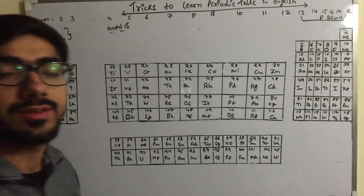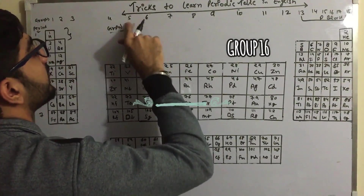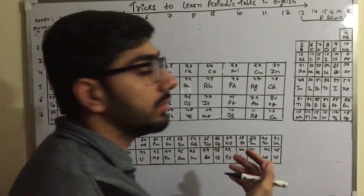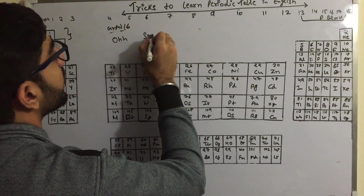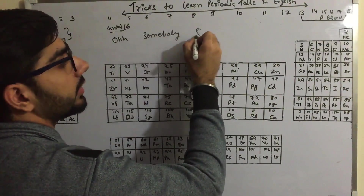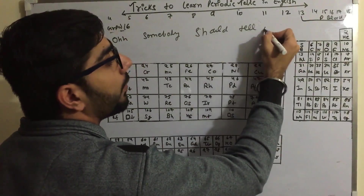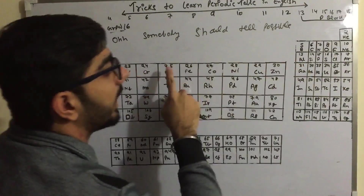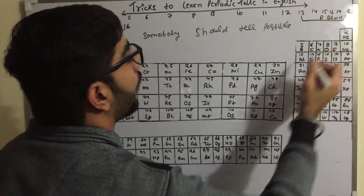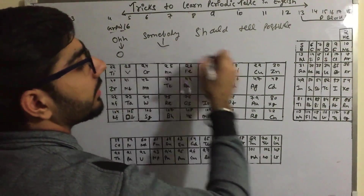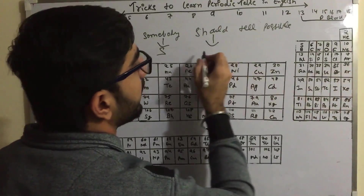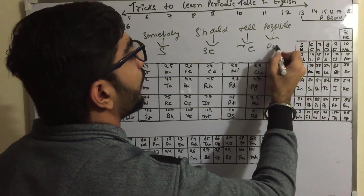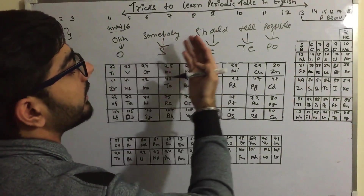Group 16 is also very important. The mnemonic is: 'Oh somebody should tell possible.' 'Oh' means Oxygen, 'somebody' means Sulfur (S), 'should' means Selenium (Se), 'tell' means Tellurium (Te), and 'possible' means Polonium (Po). This trick is for Group 16.